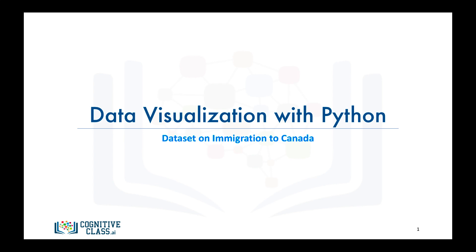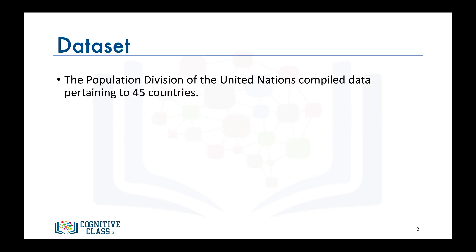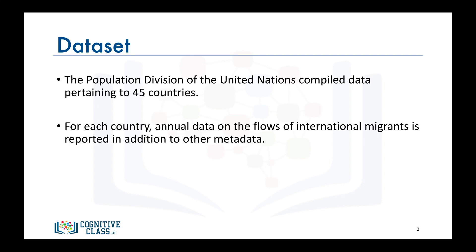In this video we will learn more about the data set that we will be using throughout the course. The population division of the United Nations compiled immigration data pertaining to 45 countries. The data consists of the total number of immigrants from all over the world to each of the 45 countries, as well as other metadata pertaining to the immigrants' countries of origin.